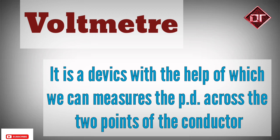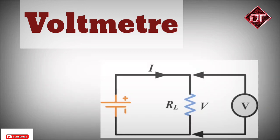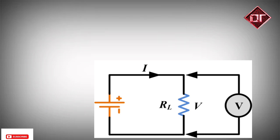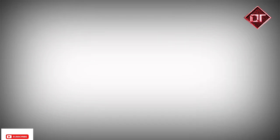So voltmeter is a device which is connected in parallel. We connect it in parallel, not in series. Because in the ideal condition, the internal resistance of a voltmeter is infinity, so we connect it in parallel.